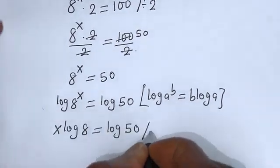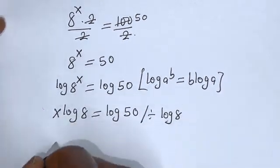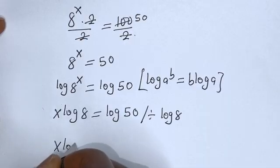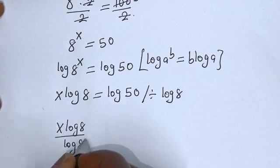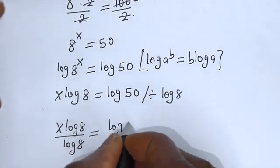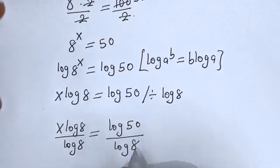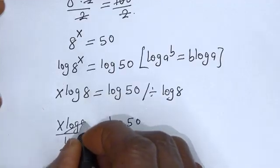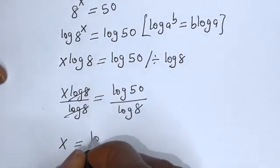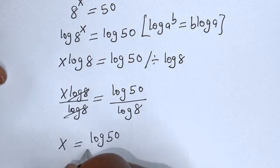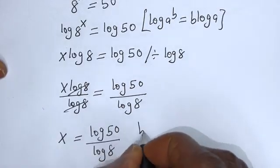Now let us divide both sides of this equation by log 8. This can be written as s times log 8 divided by log 8 is equal to log 50 divided by log 8. This log 8 cancels this log 8, leaving s is equal to log 50 divided by log 8.